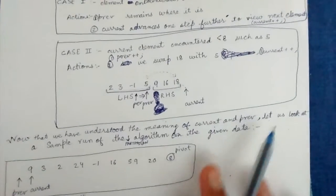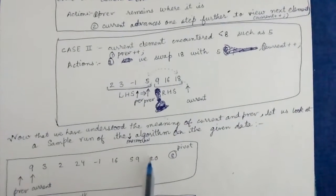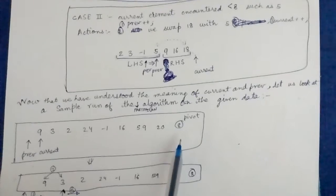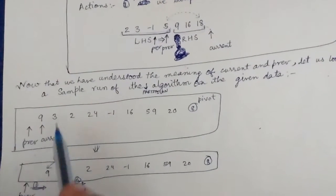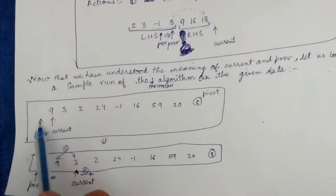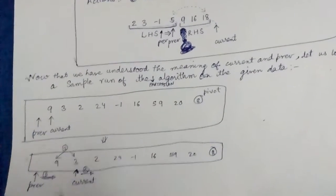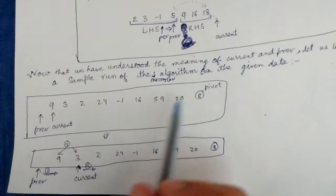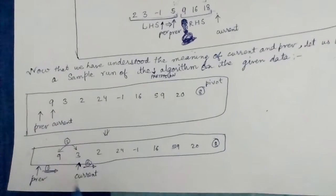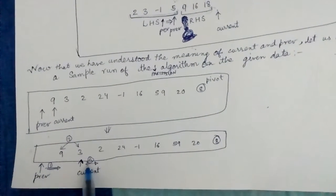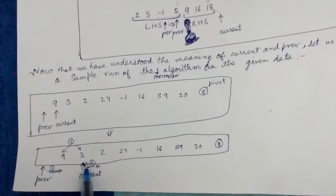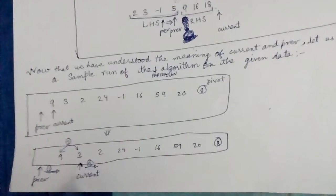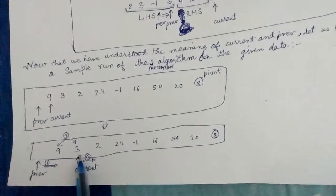Let's take an example to better understand how this algorithm works. This is a sample run on the data we considered. Initially prev is here and current is here. We see current element 9 is greater than pivot 8, so we just increment current, and current now points to 3.